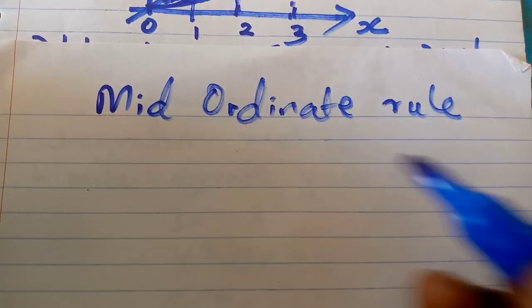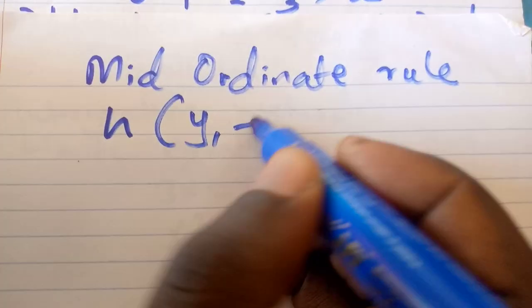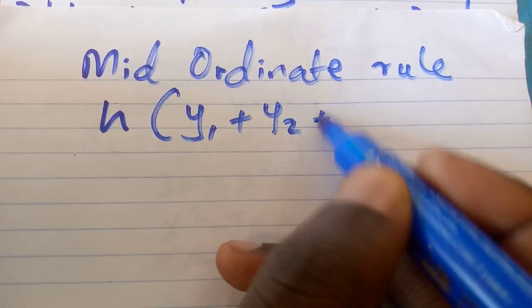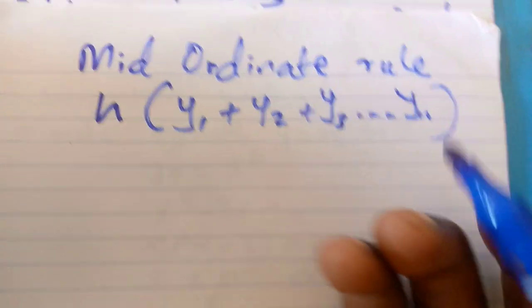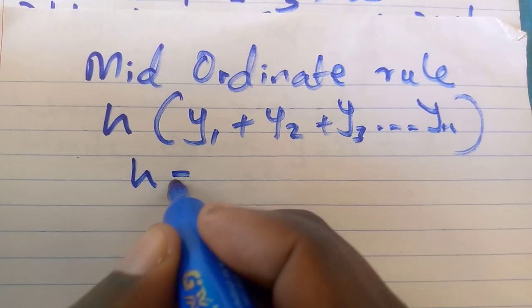We have h into y1, y2, y3. But our h is 1.